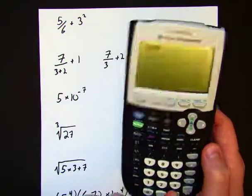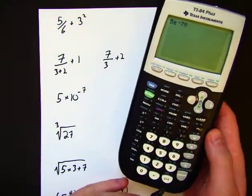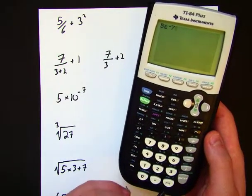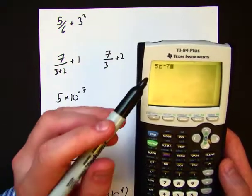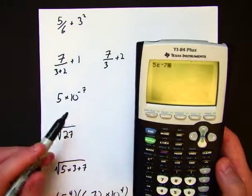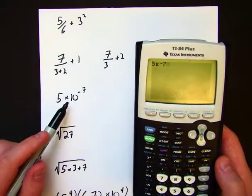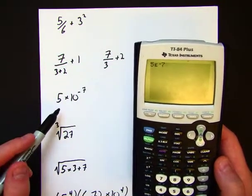Now, I have to hit negative 7. Again, this is the negative sign, not to be confused with minus or subtract. Okay, so this is the negative 7. Right now, it says 5E negative 7. This means the same thing as this. Don't write this on any test. You would write this, of course, because this is standard notation.